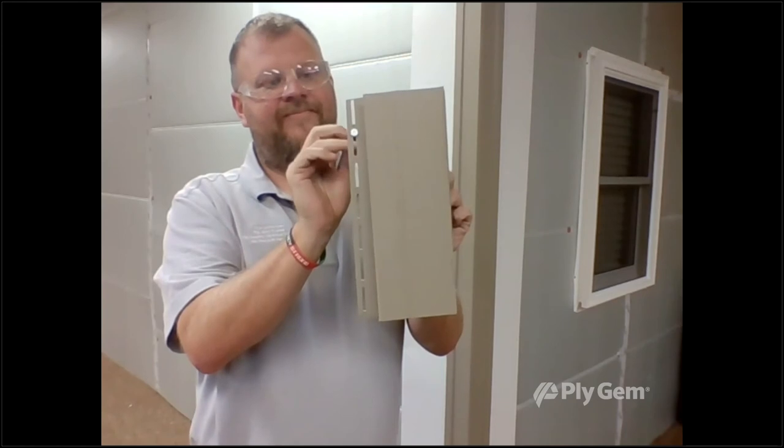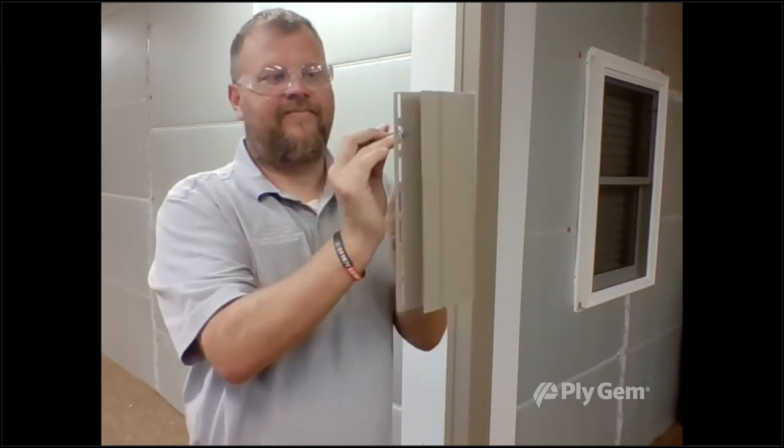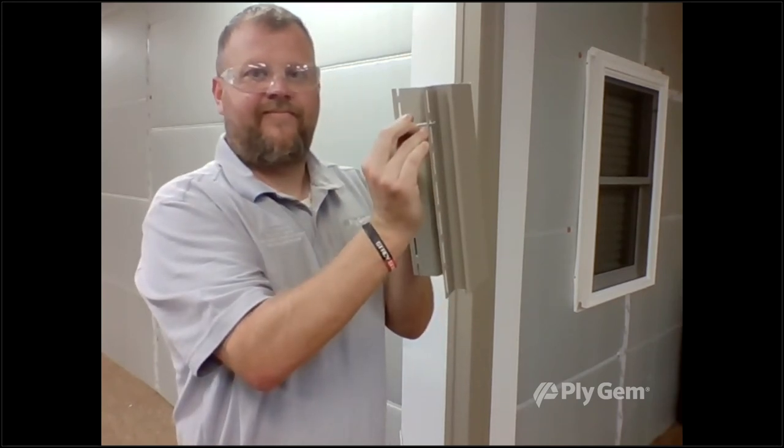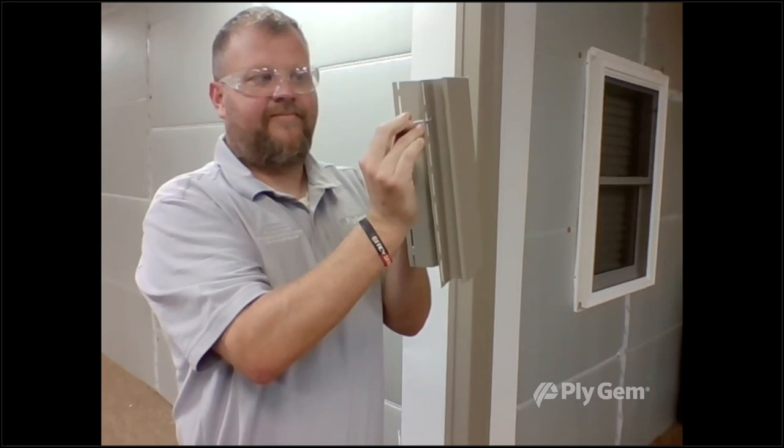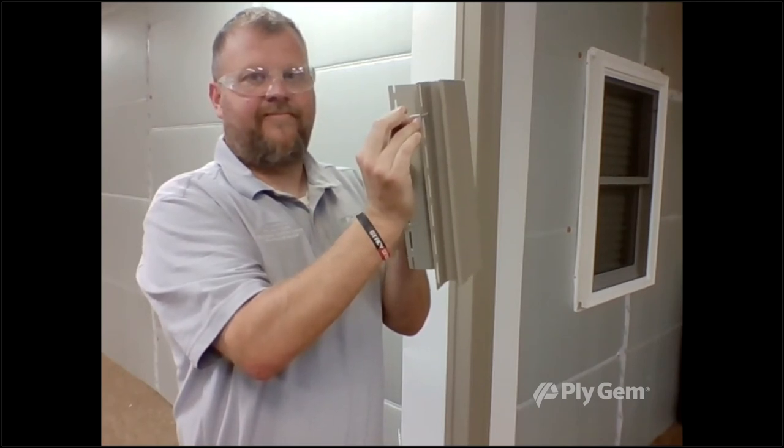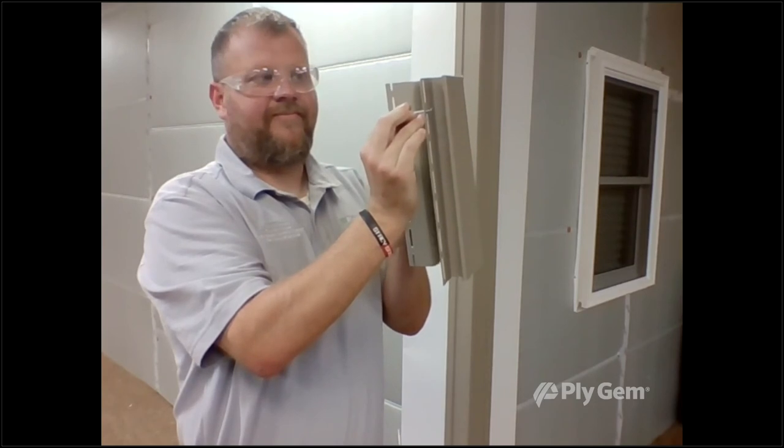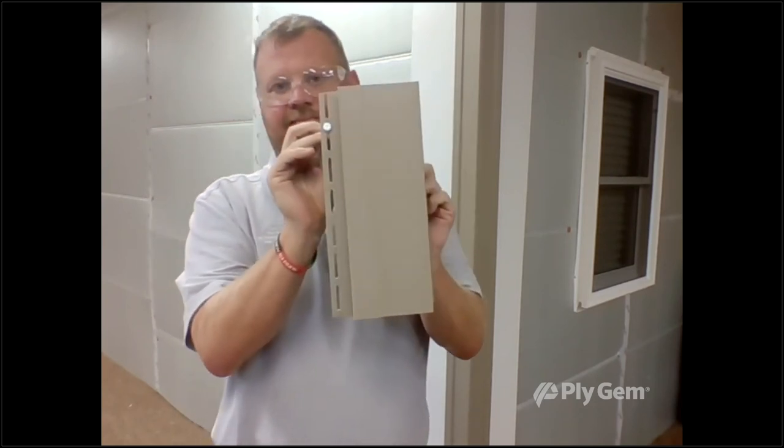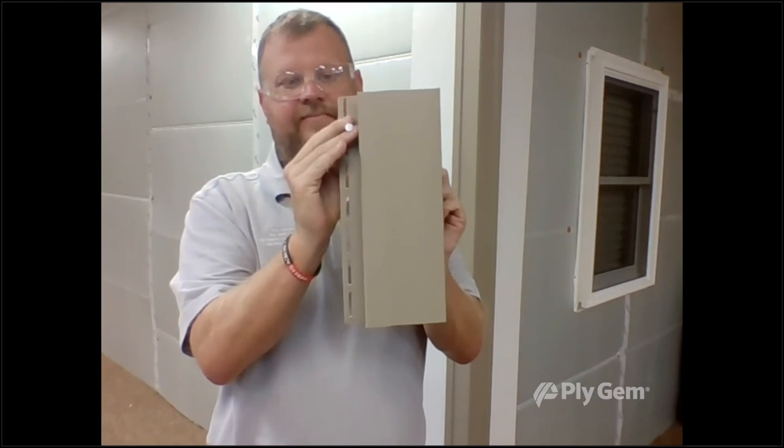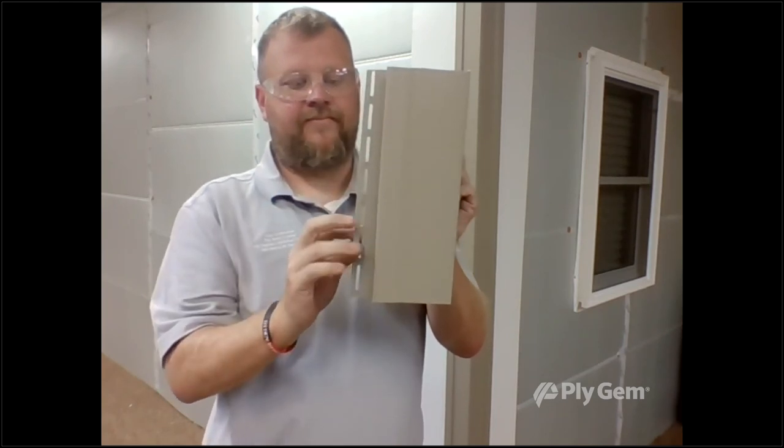A lot of contractors nail tight, but you shouldn't - it causes oil canning and the corner can't move. Leave about a 32nd of an inch gap. Nail it in the top of the top slot on both sides, then space nails every 10 to 12 inches. All other nails must be in the center so the corner post can move up and down.